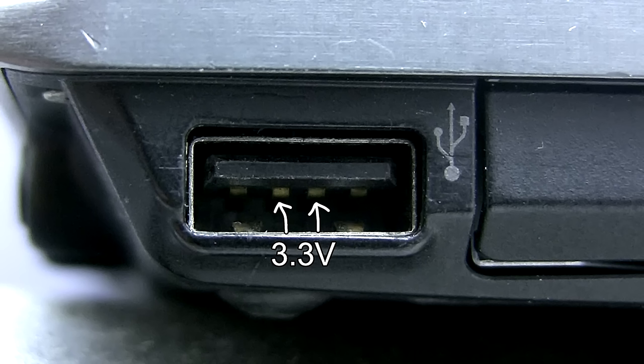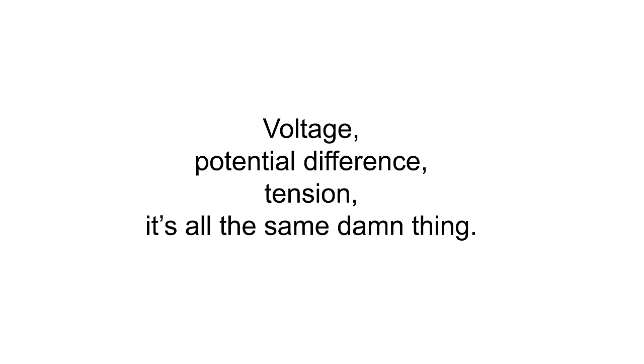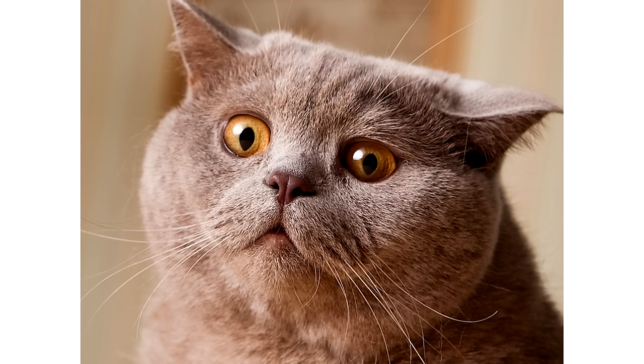These two pins are used for sending digital messages, and there's a rapidly changing 3.3 volts between them which carries the information. So, voltage is always measured between two points, and this is why voltage is also sometimes called potential difference. That's right, voltage can sometimes be called potential difference, tension, and a lot of other names. No wonder people get confused.